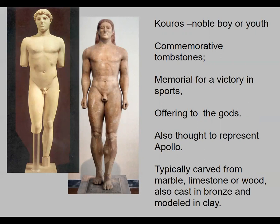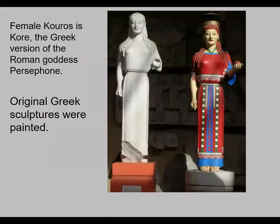Another carved type of sculpture is the Kouros, which means 'noble boy or youth.' These were used in Greece and Rome as commemorative tombstones, memorials for victory in sports, offerings to the gods, and were thought to represent Apollo. They were made out of marble, limestone, or wood, and also cast in bronze. Very few bronze versions survive because the metal would be recast into other sculptures. The reason they have no clothes is that the Greeks believed gods were perfect and had perfect bodies — athletes and even soldiers ran around without clothes.